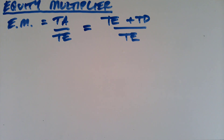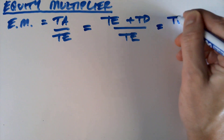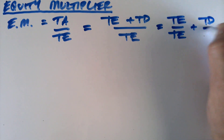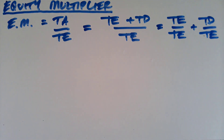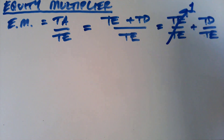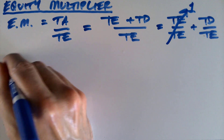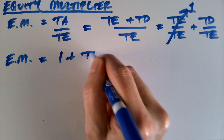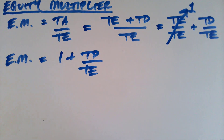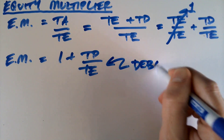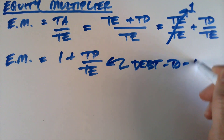Now let's do some distributing. I can distribute here and write TE over TE and TD over TE. I haven't violated any mathematical laws, and something fun happens — this cancels out to just become one. So now we can say that the equity multiplier equals one plus total debt over total equity. And total debt over total equity is just our debt-to-equity ratio.